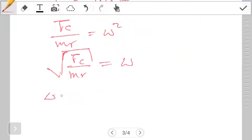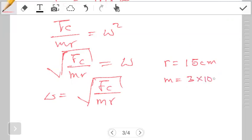I can easily write this as omega equals the square root of Fc over mr. From the question these quantities are given. We have the radius given as 15 centimeters, so this is the radius of the centrifuge. Apart from this we also have the mass of a red blood cell, which is given to us as 3 by 10 to the power negative 16 kilograms.